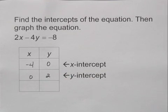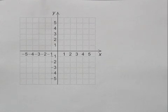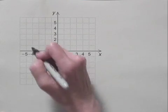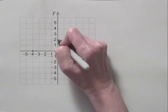We'll find a third point in a minute. Let's graph the equation first. We'll plot the two points that we found. We have the x-intercept, negative 4, 0, and the y-intercept, 0, 2.